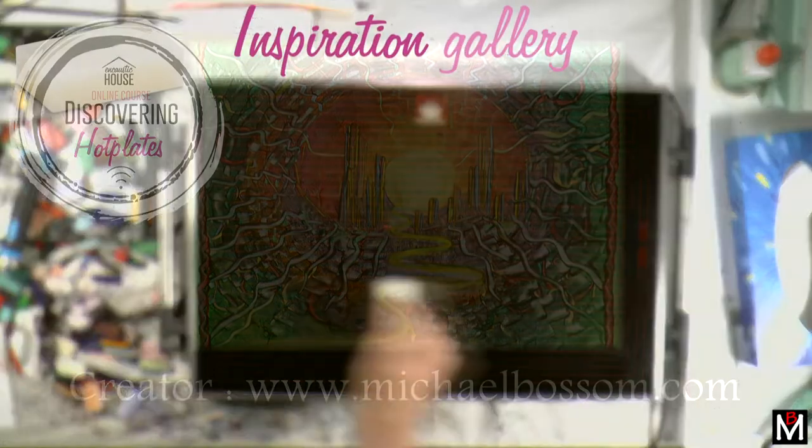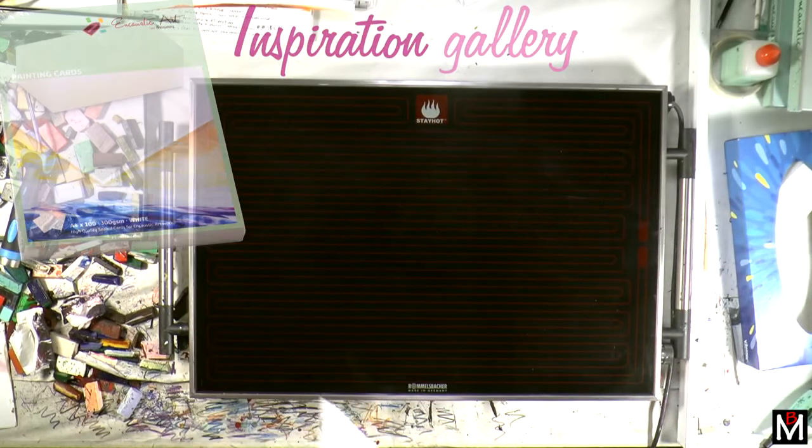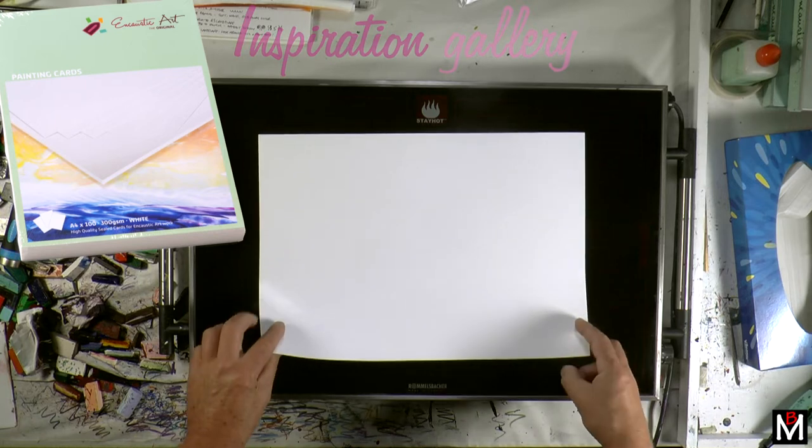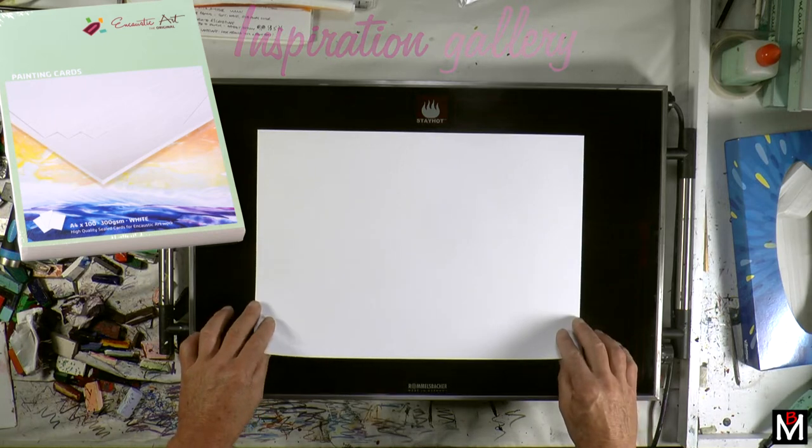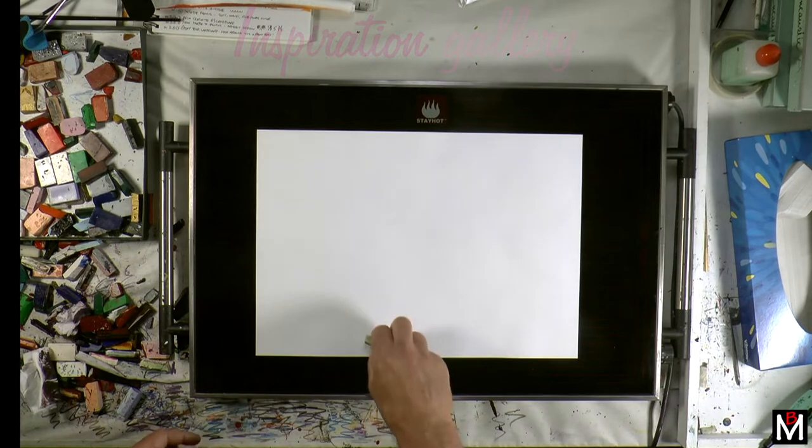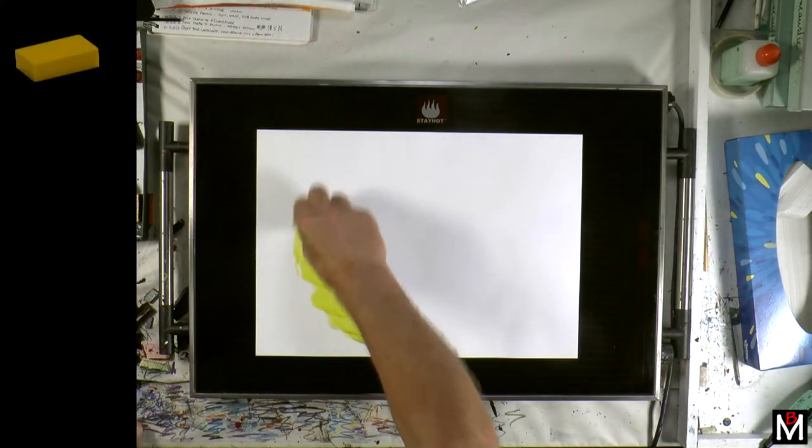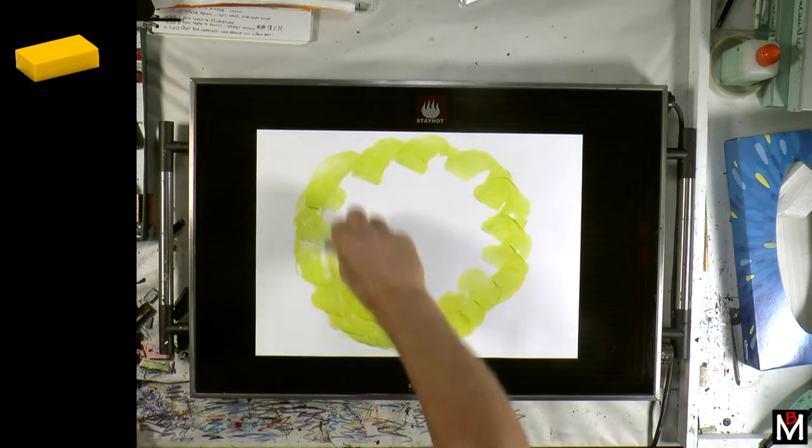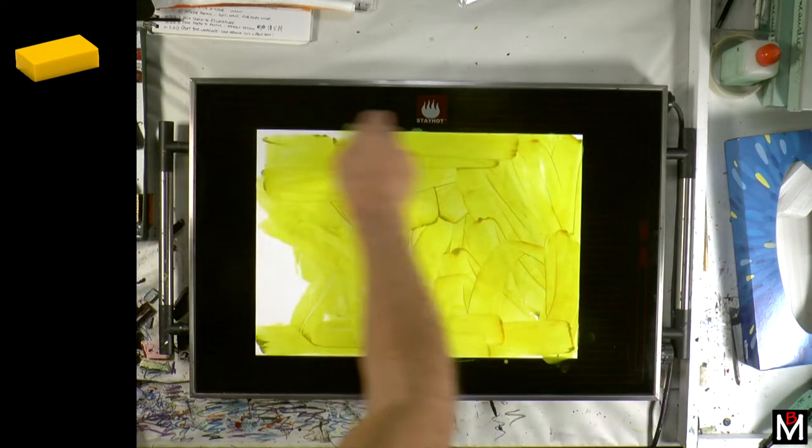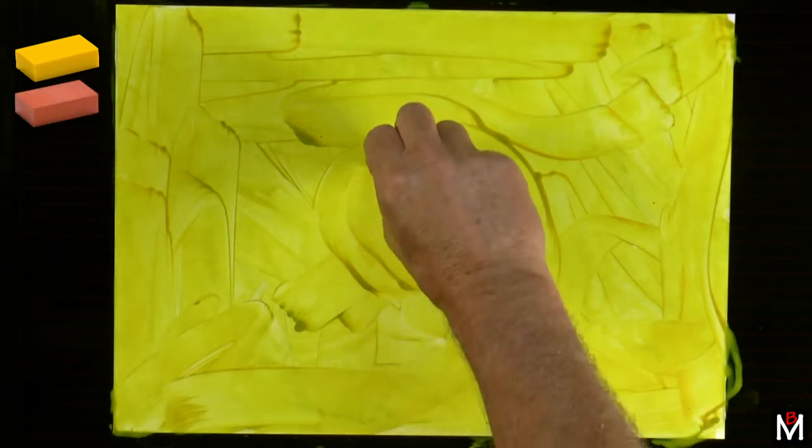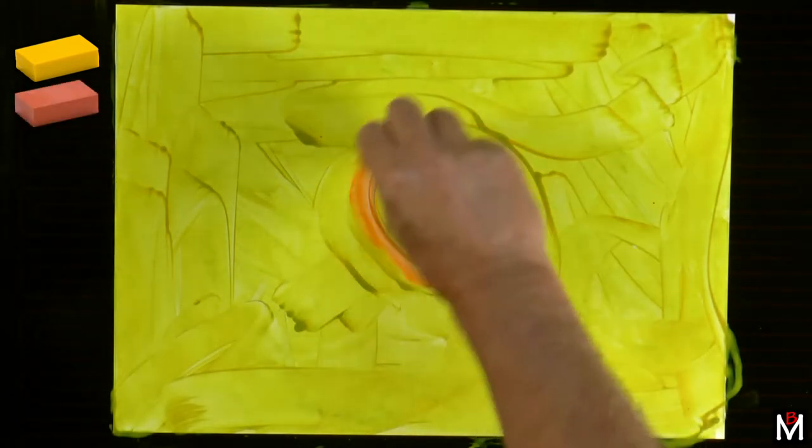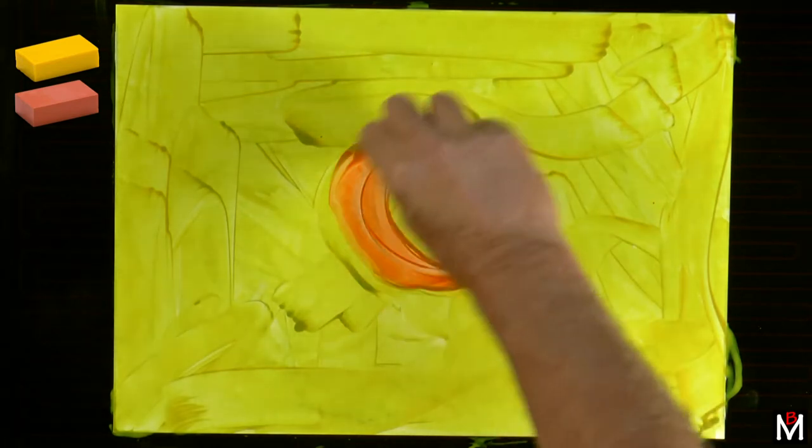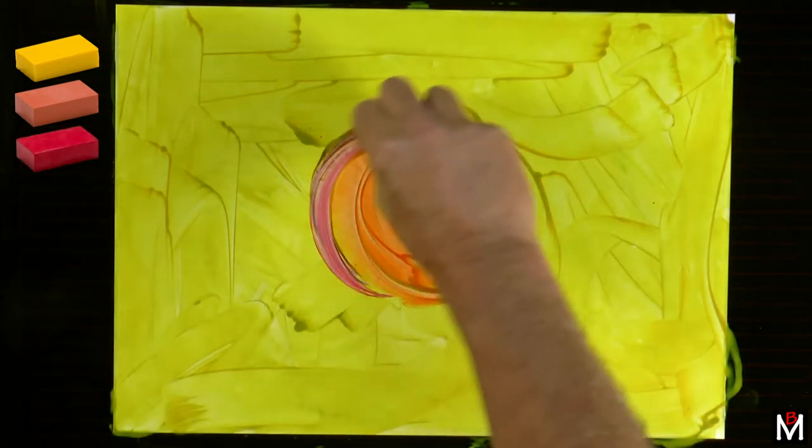Welcome. In this video, it's an image from the inspiration gallery using clear wax and white encaustic card. This is size A3 on the electric hot plate. As I go through the video, I'm going to show you the colors I'm using on that left-hand side. There'll be bits of speeding up. The idea of this video is to inspire you and look at creating an image.